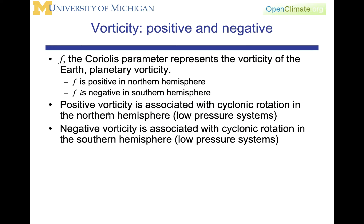It is important to define the sign of vorticity. F is the Coriolis parameter, and it represents the vorticity of the planet — the effect coming from the Earth's rotation. It will be what we call the planetary vorticity. F is positive in the northern hemisphere and negative in the southern hemisphere. Remember, it's 2 omega times the sine of the latitude. Positive vorticity is associated with cyclonic rotation in the northern hemisphere, which is the circulation around low-pressure systems.